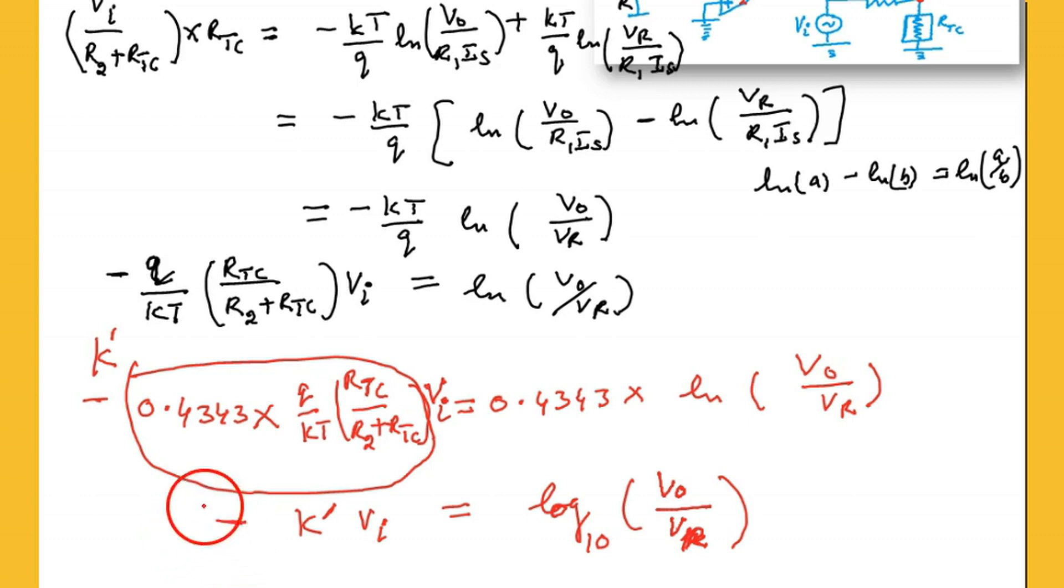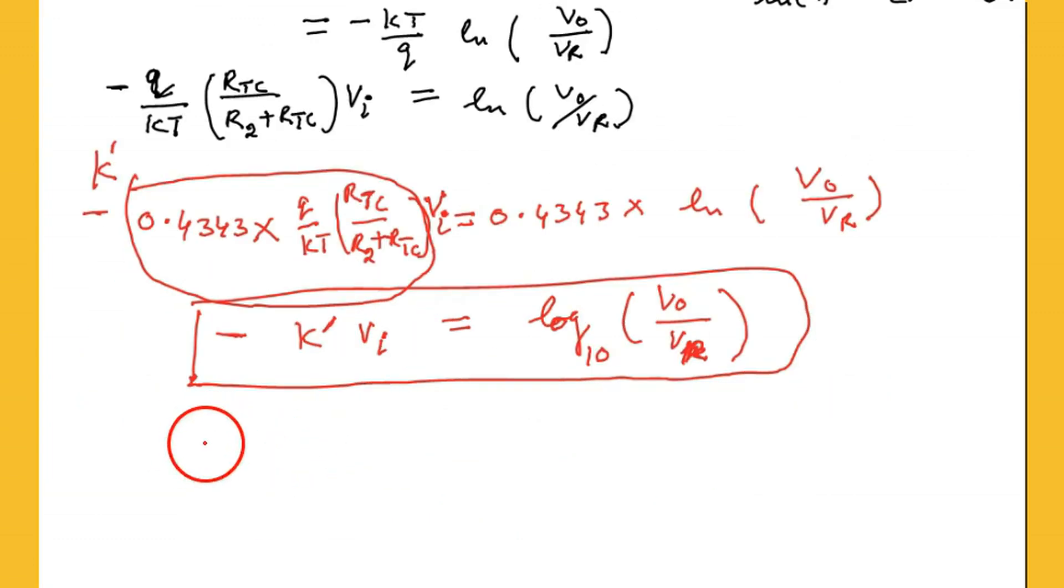Now we want to find the output voltage. So we know that we are taking log to this side. So antilog is called exponential because it is log to the base 10.